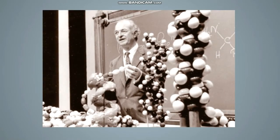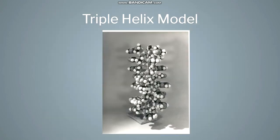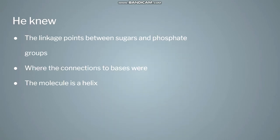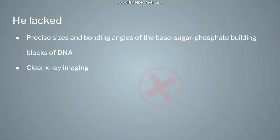In February 1953, Linus Pauling proposed a structure for deoxyribonucleic acid. In his article, Pauling suggested a model for DNA that consisted of three nucleic acid strands wound together in a triple helix. He had confirmed the linkage points between sugars and phosphates. Previous work had shown where the connections to bases were, and he knew that the molecule was most likely a helix. However, he still lacked critical data. He had no decent x-ray images, and he had no firm structural data on the precise sizes and bonding angles of the base sugar phosphate building blocks of DNA.